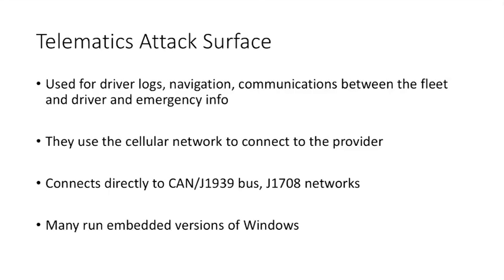Let's talk about the telematics attack surface. Most heavy trucks in a fleet have a dash-mounted touchscreen that controls the driver's logs, navigation, and gives them a way to communicate with the fleet — kind of like email — and in emergencies contacts the fleet. They use the cellular network to connect to the telematics provider, and these devices connect directly to the CAN and J1939 bus, as well as the legacy J1708. Many of them run embedded versions of Windows like Windows CE or XP Embedded — which is kind of scary. We've had some luck rooting them by doing things like popping an SD card out of the back.